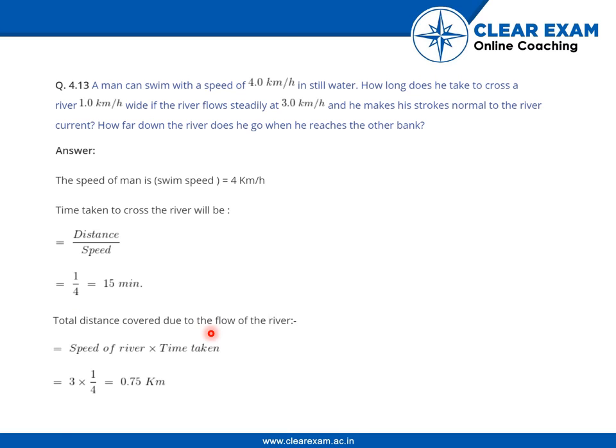...is speed of the river times time taken, which is 3 times 1 by 4, that gives us 0.75 kilometer.